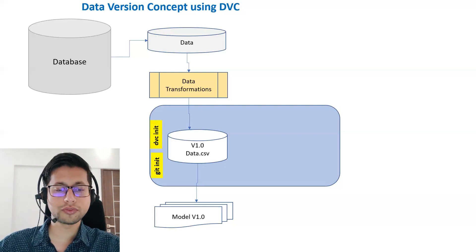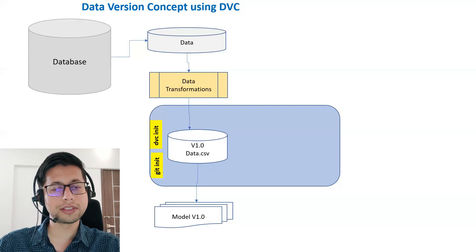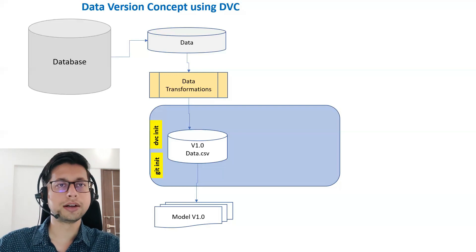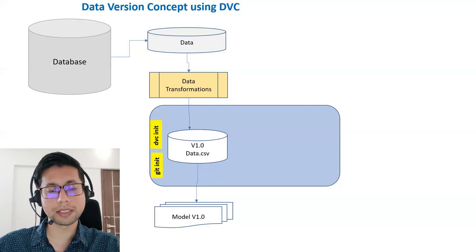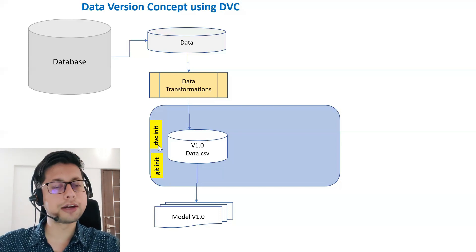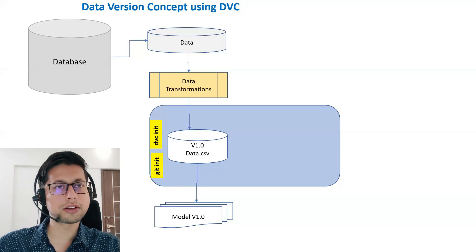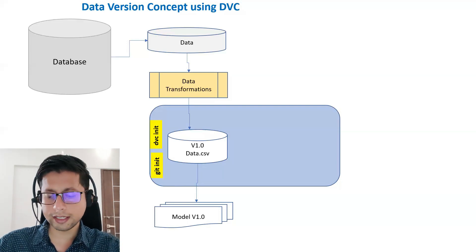You can run git init and then dvc init. Make sure you initialize git first and DVC later — if you change the sequence it will throw an error, because DVC needs a version control mechanism in place. Also, to use DVC you need to install it first: you can use pip install dvc in your conda or Python environment, so all DVC commands will be available to you.